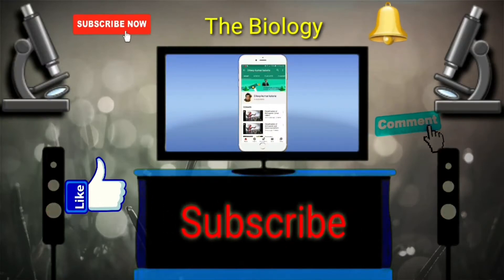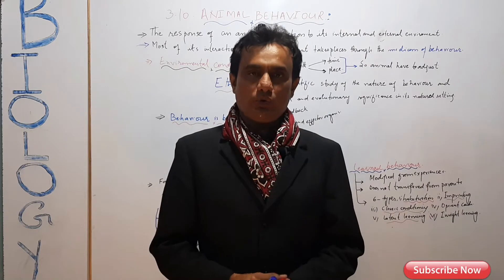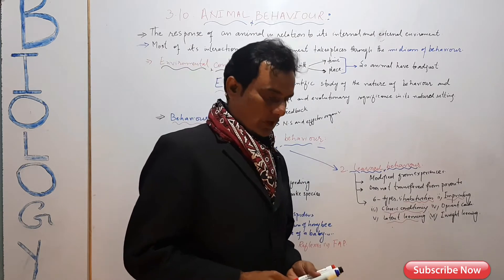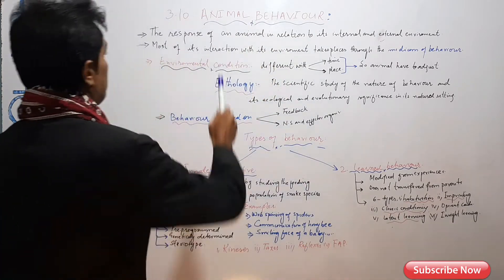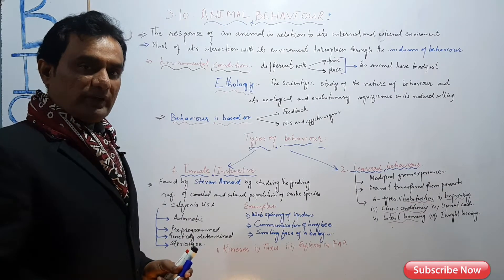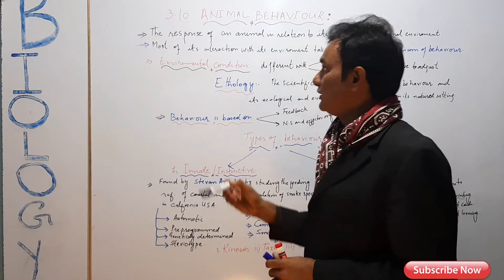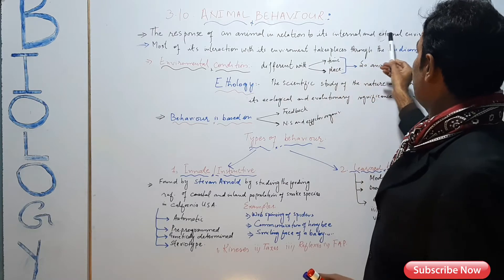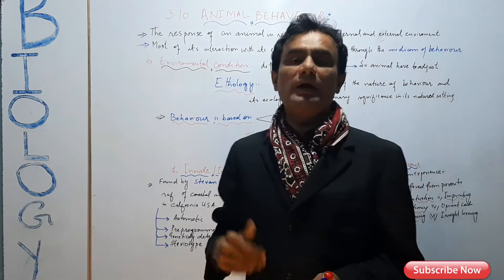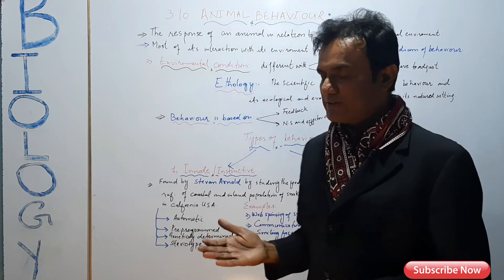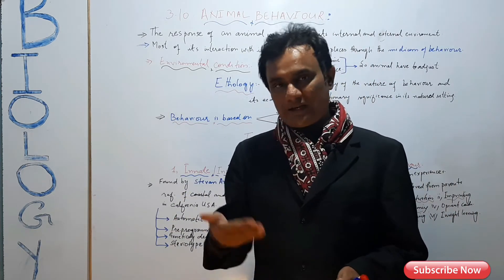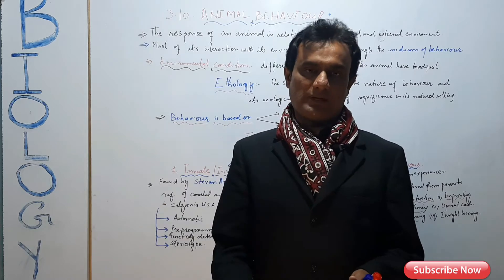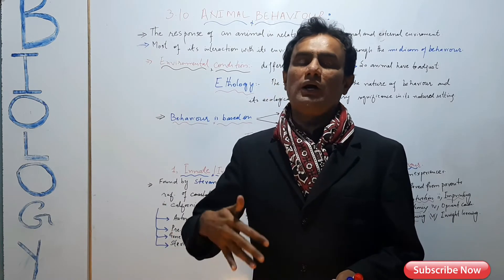Subscribe to the biology channel and press the bell icon. Hello everyone, today we will learn about animal behavior. Animal behavior is the response of an animal in relation to its internal and external environment — that is called animal behavior. This behavior occurs when there are changes in the internal or external environment.